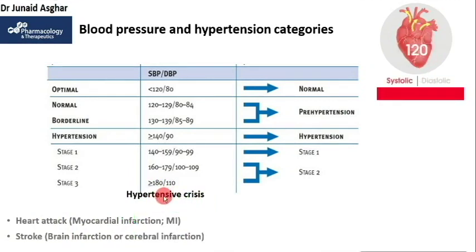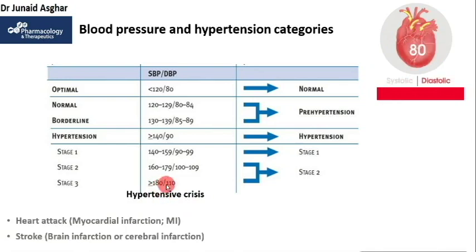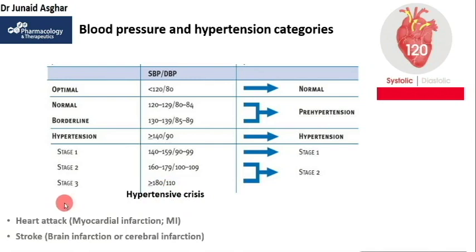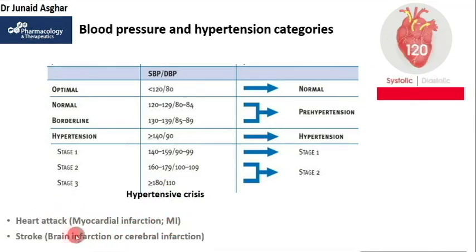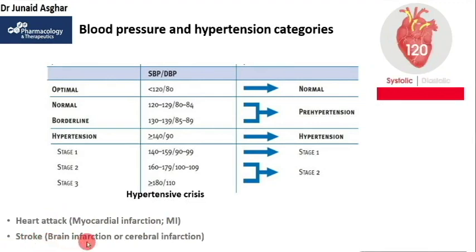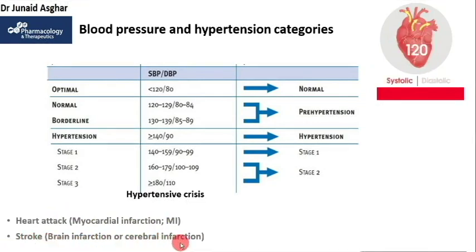Over time, damage caused by persistently high blood pressure, if left untreated, could lead to heart attack or myocardial infarction and stroke, also called brain or cerebral infarction.